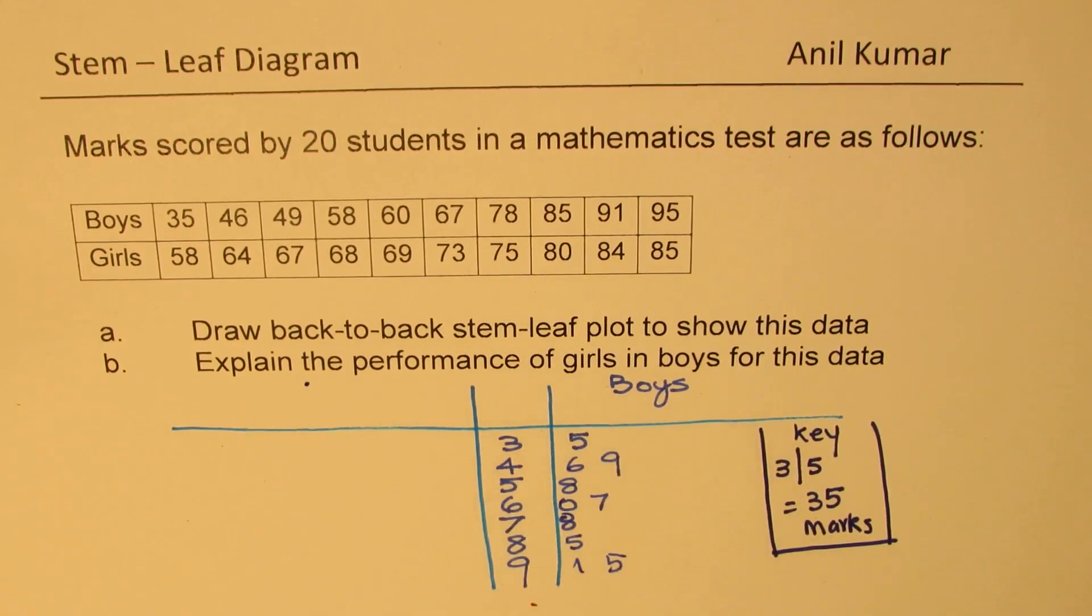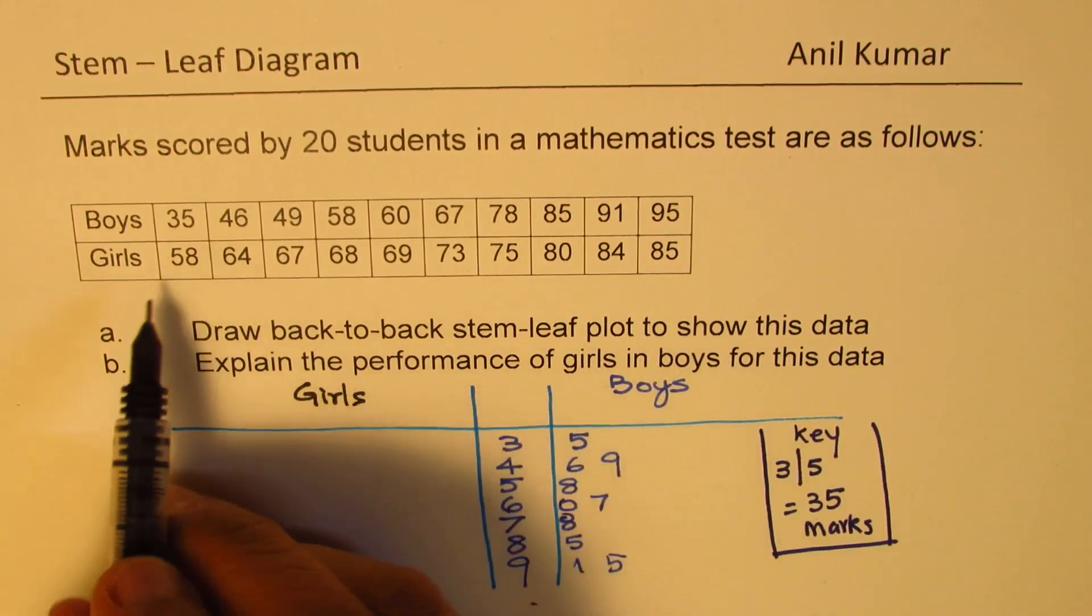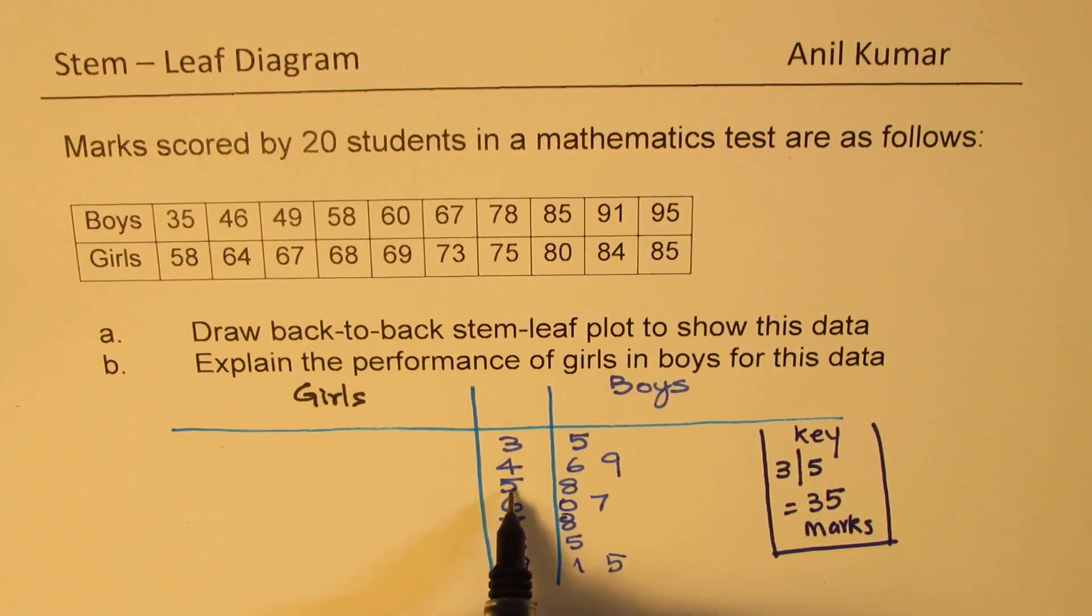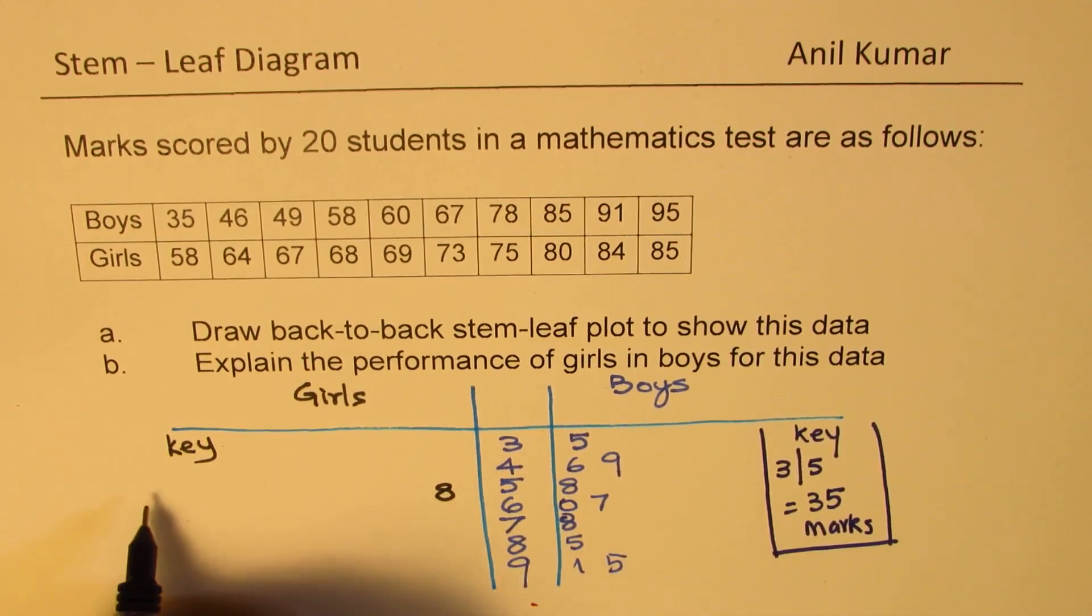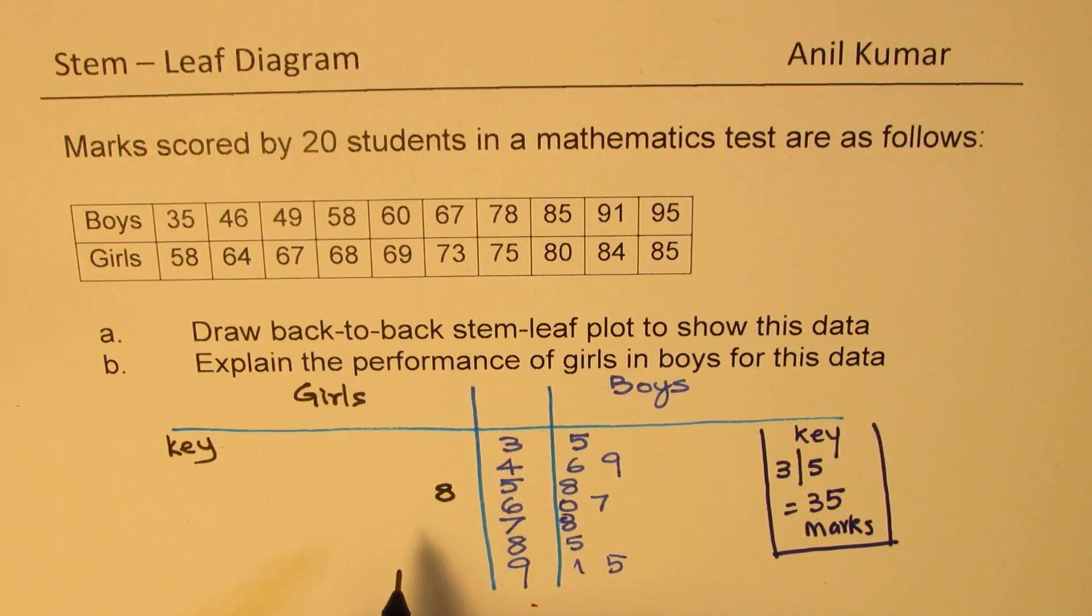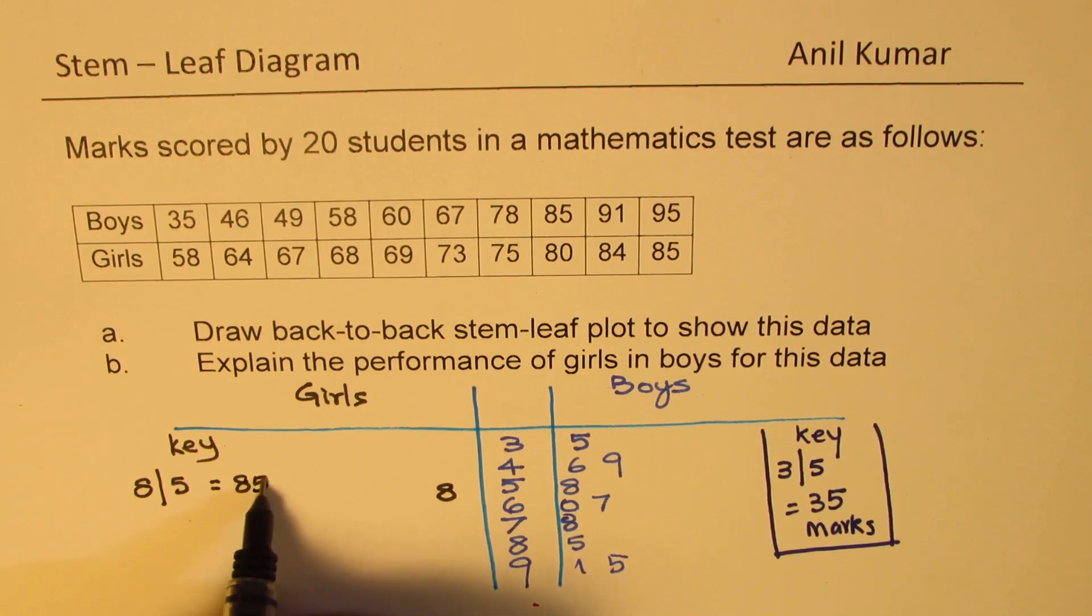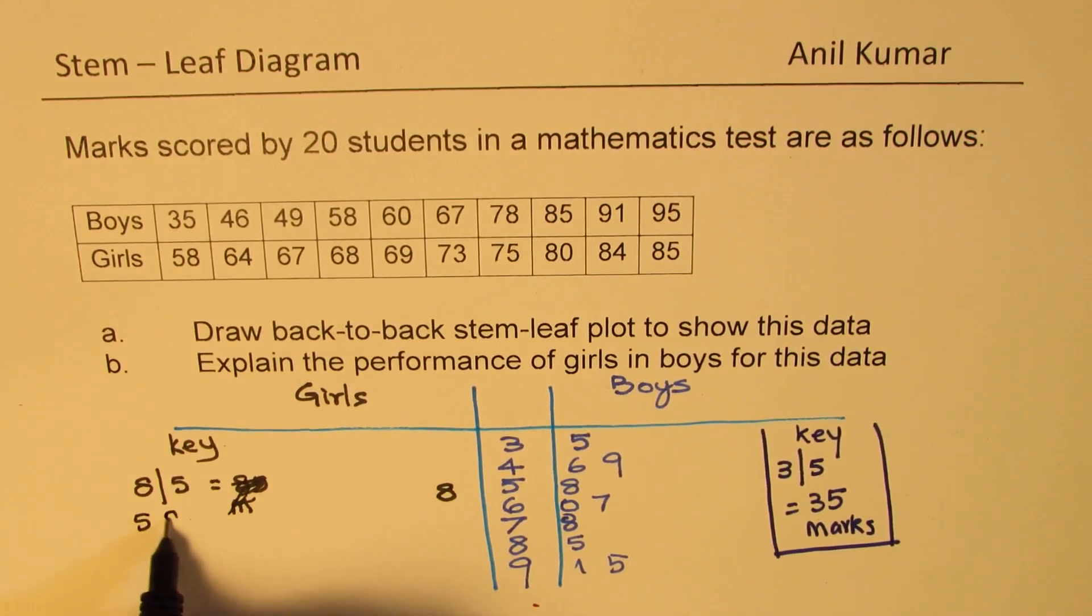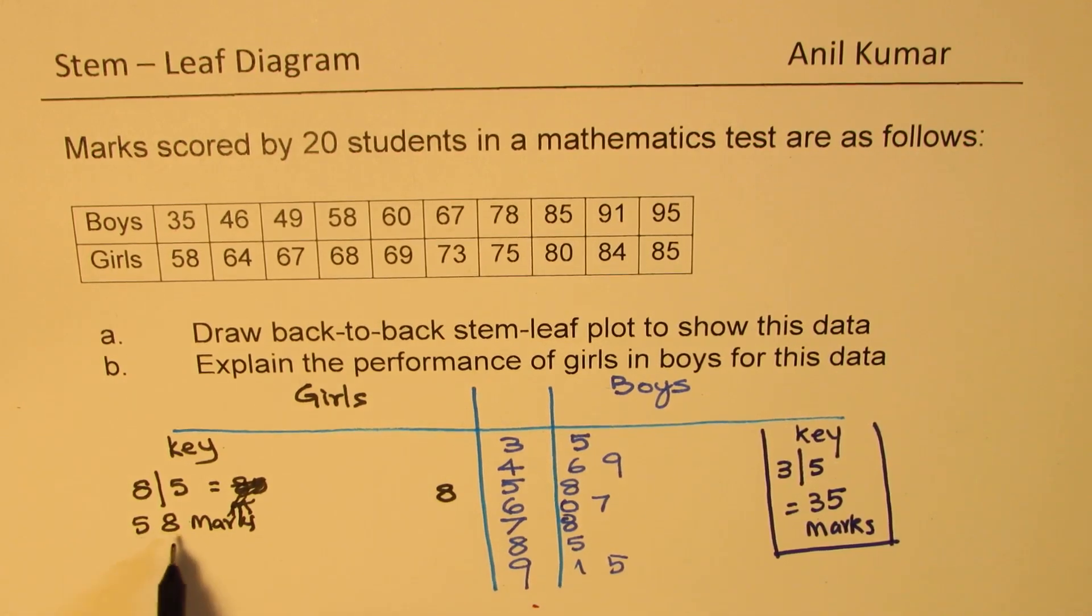Now for the girls, we'll put it on the other side. Let me use another ink here. Okay, so for girls, we have 58. Now 5 and 8. We have 5 here. We can place 8 on the left side. So 8 like this, 58. Now here the key is what? In this case, the key is that we are writing, first we are writing this 8. So when you see it is 8 slash 5, so it's like 8 bar 5. That really means 58 marks, not 85. That means 58 marks. It's the other way. So we are placing 5 in the stem, 8 in the leaf. So it is important to note that this 8 slash 5 means 58 marks.